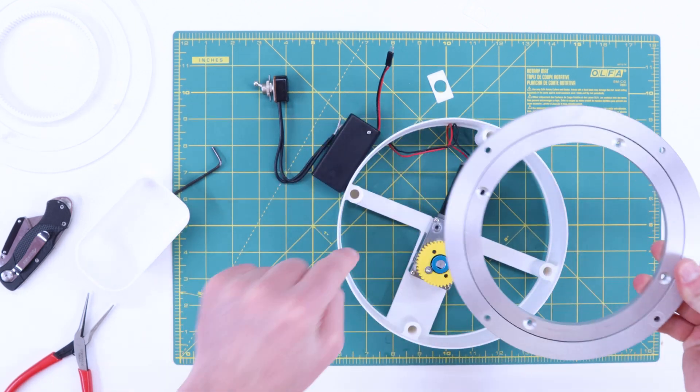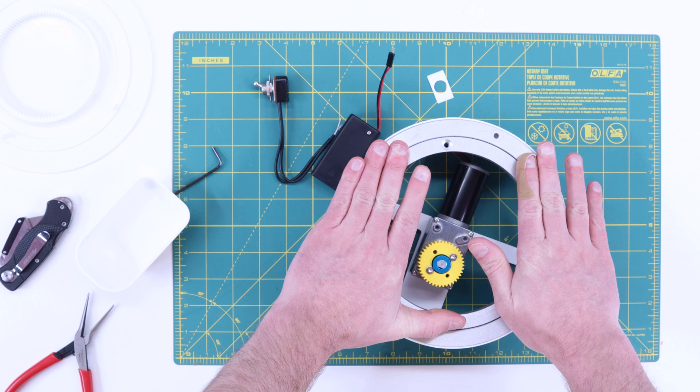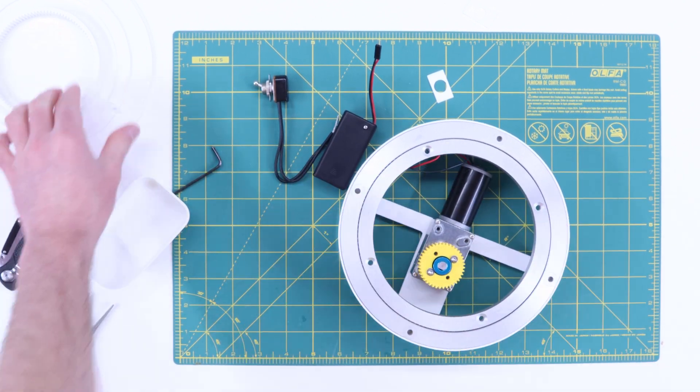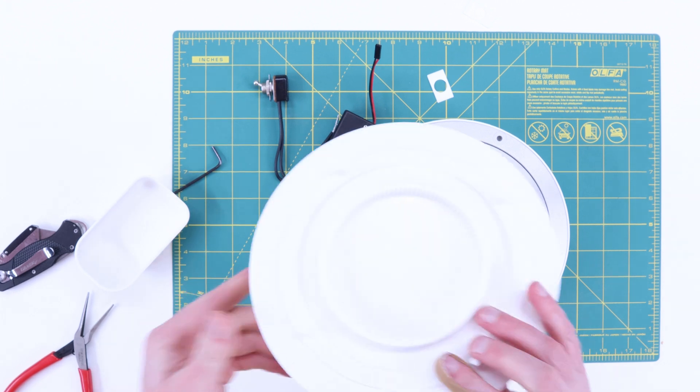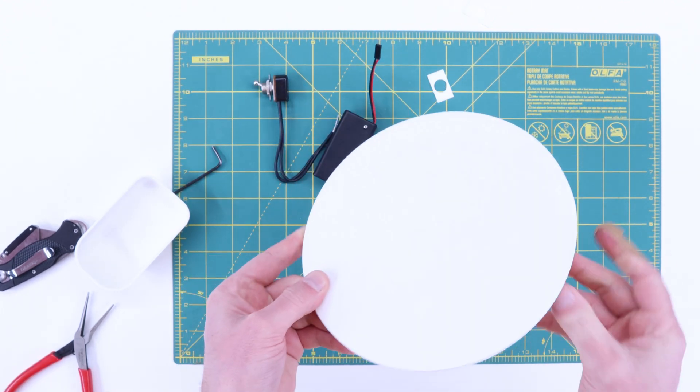This lazy susan I got online just press fits directly into the base. Same with the gear - this just press fits directly into the lazy susan. You don't need any fasteners.